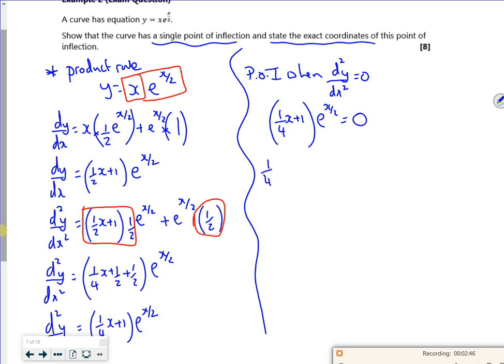So my quarter x plus 1 times e to the x over 2 is equal to 0. So if I take the first bit, I've got a quarter x plus 1 is 0. Take the 1 over, multiply by 4, I get x equals minus 4. And then the e to the x over 2 is 0, so that has no solution, as e to the x over 2 is always greater than 0.